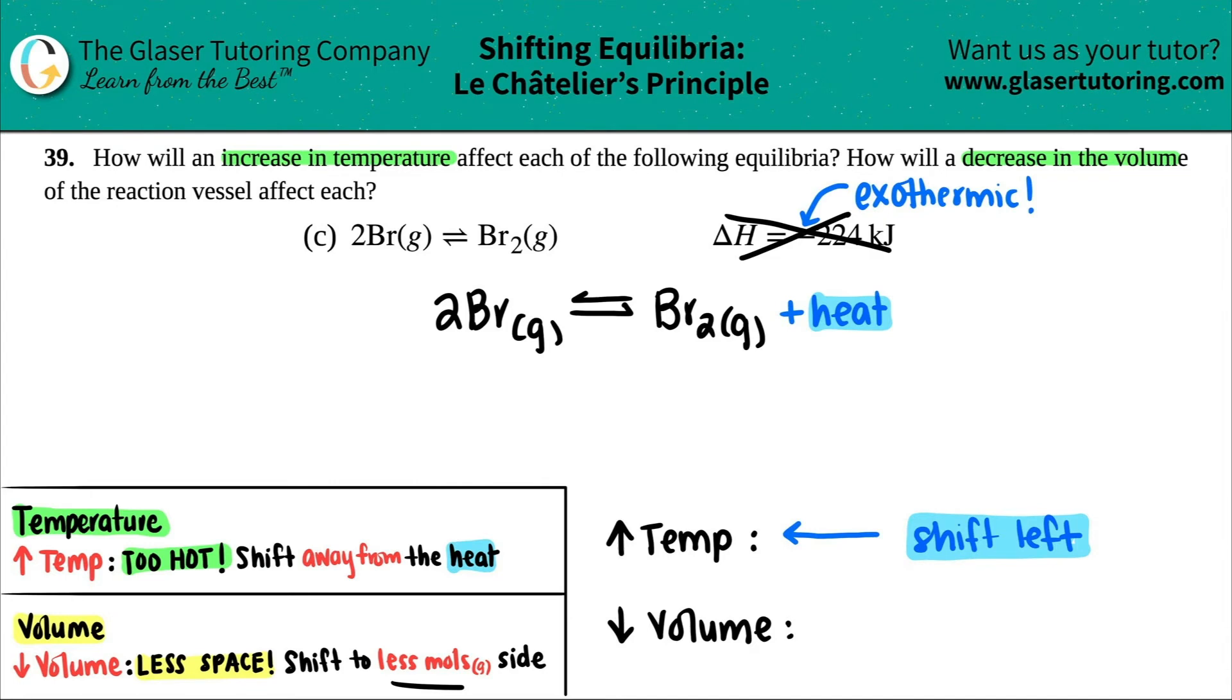So if you have less space, you want less moles in that container, right? With less space, you don't want to have too many things inside, too many moles. So you want to favor the side that has the less moles and be careful. It's only the moles of gas that we care about.